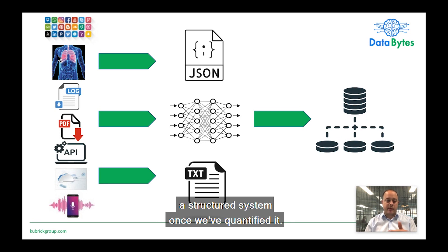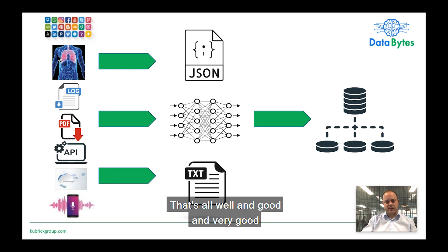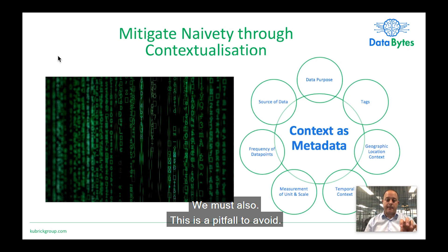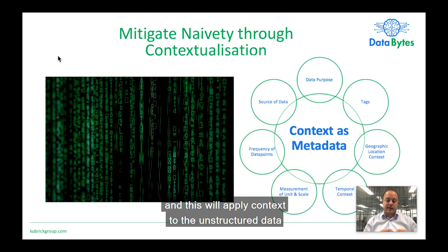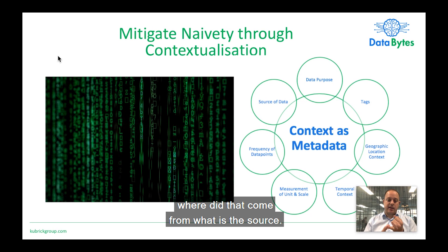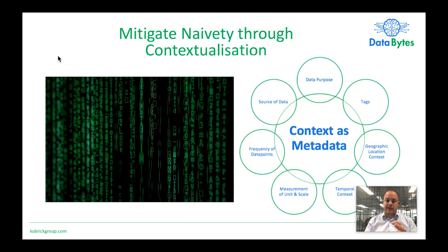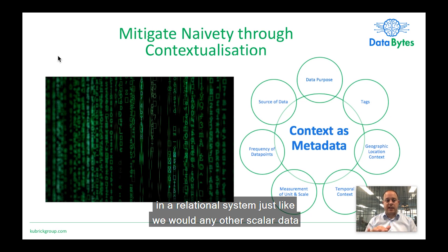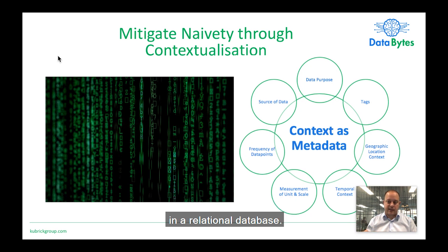The output of all of these can then be passed into a structured system once we've quantified it. Now, it's all well and good to understand unstructured data, but we'd be missing a trick if we stopped there — this is a pitfall to avoid. We must also understand the metadata of those files that we're storing in our data lake. This will apply context to the unstructured data so we know what we're actually looking at: where did that data come from, what is the source, what tags describe that data, what's the point in time of the snapshot, the date, the geographic location, who's the customer it's describing. We need to store this scalar data in a relational system just like we would any other scalar data in a relational database.